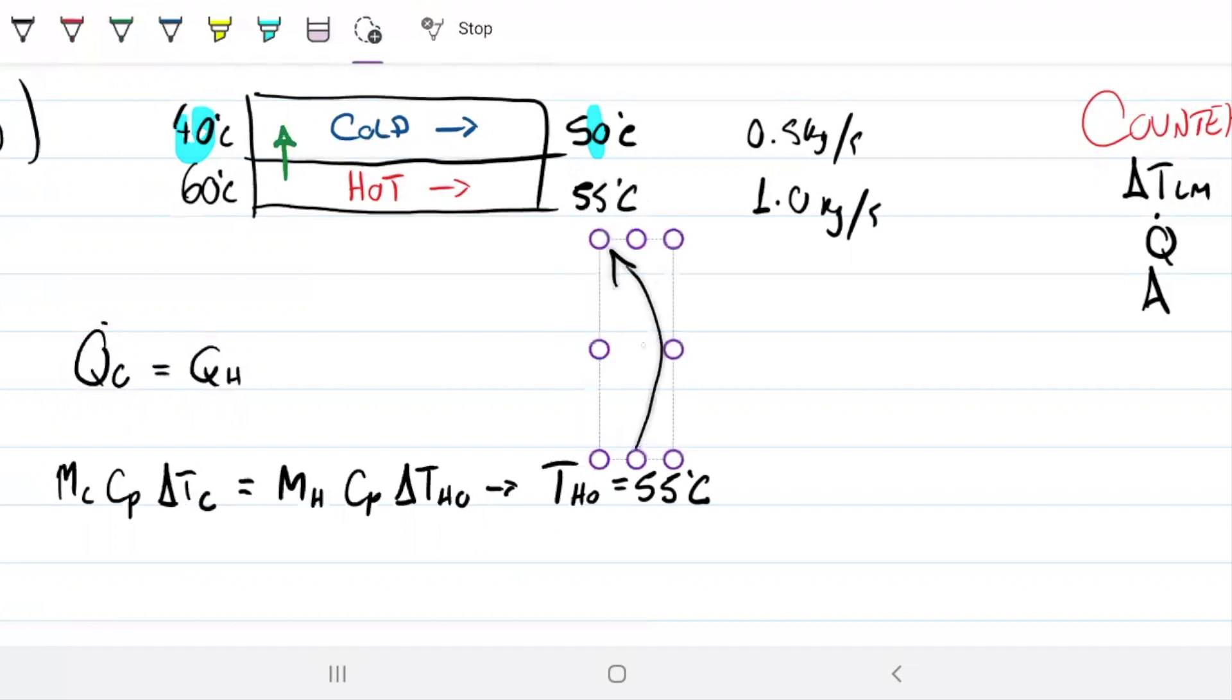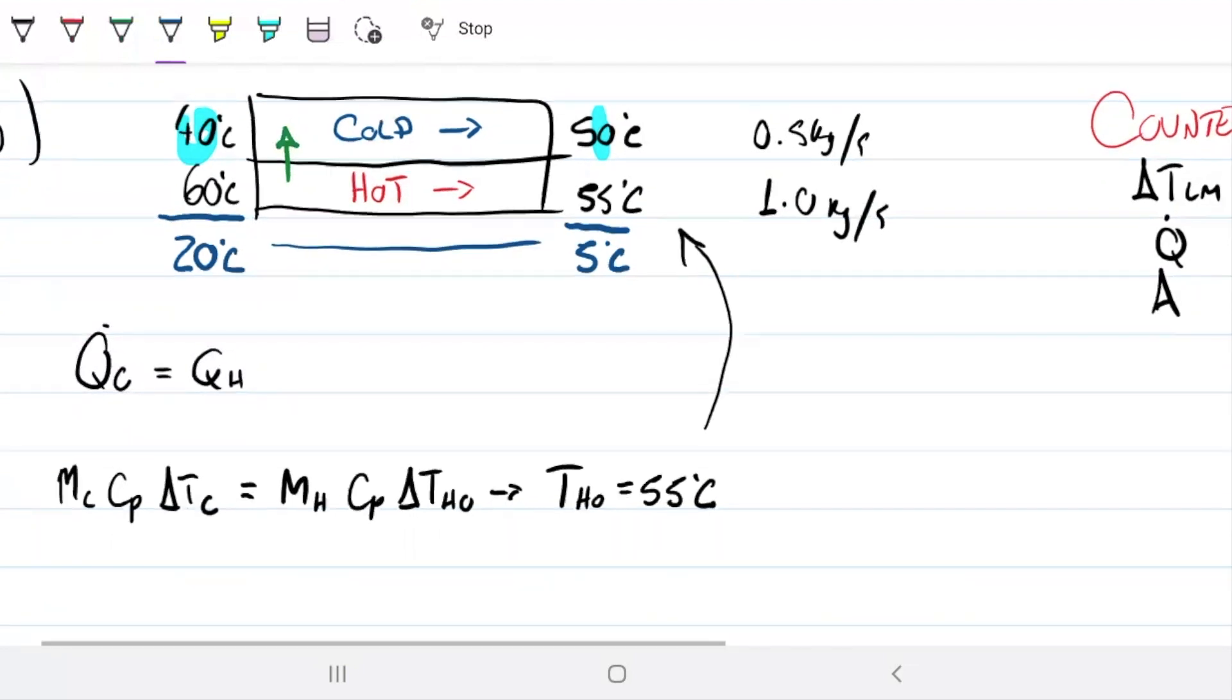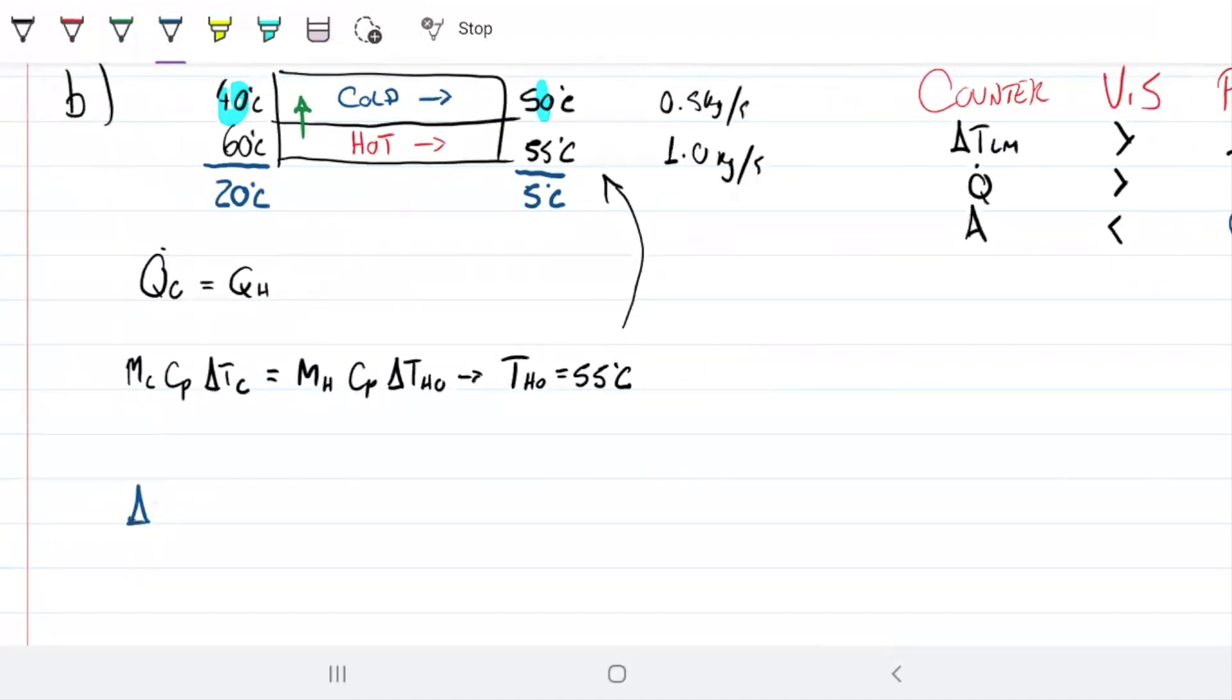However, what does change now is our delta T's, because on this side here we have 20, which is a big delta T in comparison to the others, but over here we only have 5. So our log mean now is going to be somewhere between 5 and 20. Our delta T log mean is (20 minus 5) divided by the natural log of 20 over 5. This turns out to be 10.82. Remember what it was for the previous one, it was 12.33, so note how nothing changed between the two except the delta T natural log mean.